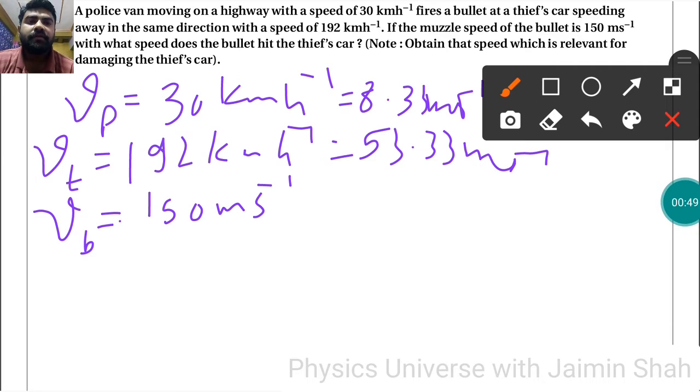So here we have to find speed. See, first of all, the police van is at 30 km per hour and muzzle speed is 150. Both are in the same direction, so the gun has the velocity of the same van.